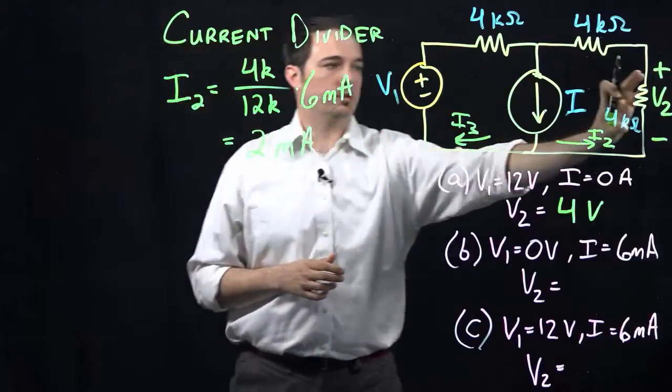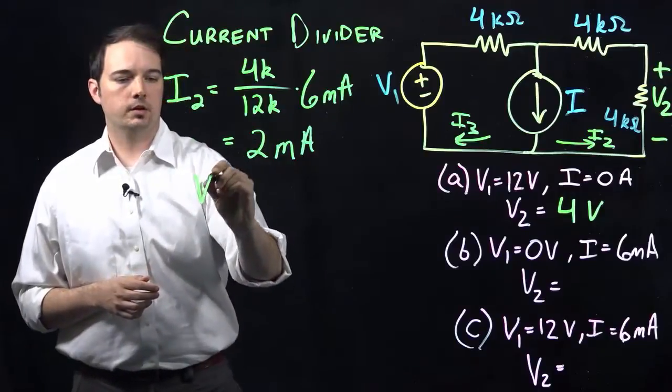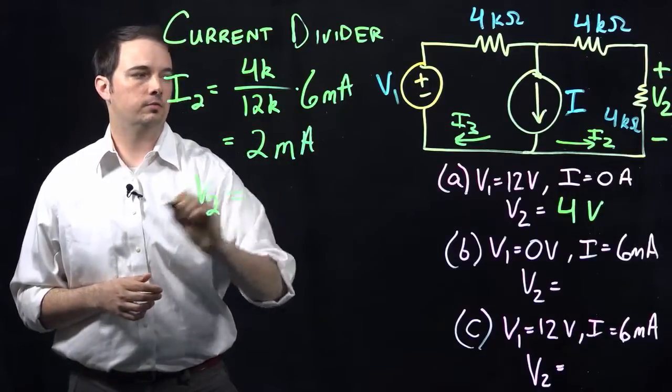So now what do we do to figure out what the voltage V2 is? Well, we know the current. So we can just simply use Ohm's Law, V equals IR.